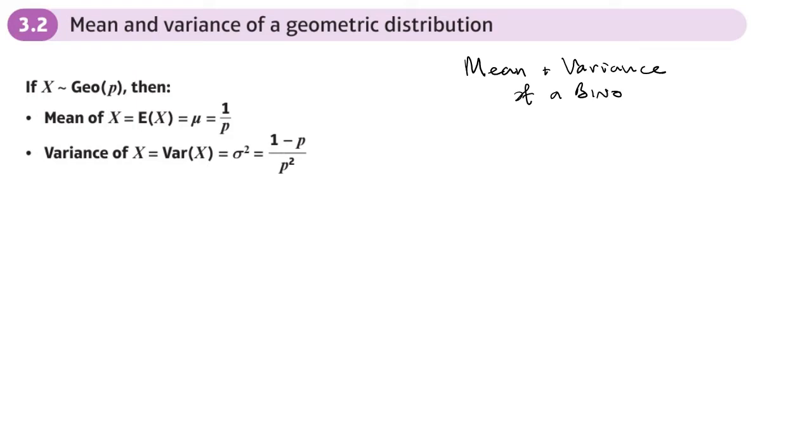So just remind yourselves how you do that, how you find the mean and variance of a Poisson distribution, and also what you use for the mean and variance when you are approximating a binomial using a normal distribution.